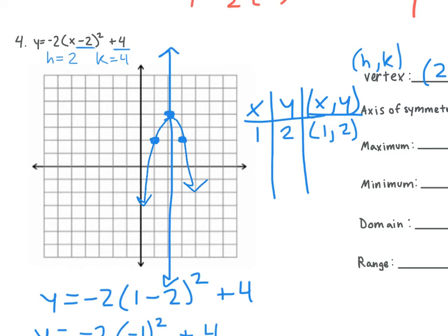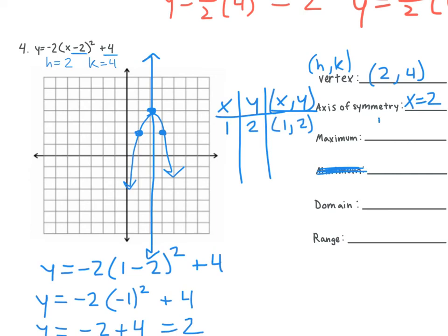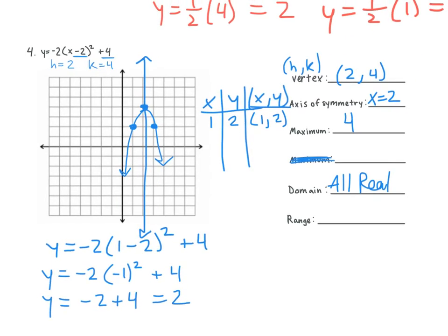Do we have a max or min here? A max. And our max is 4. What's our domain? All real numbers. And our range is negative infinity comma 4.